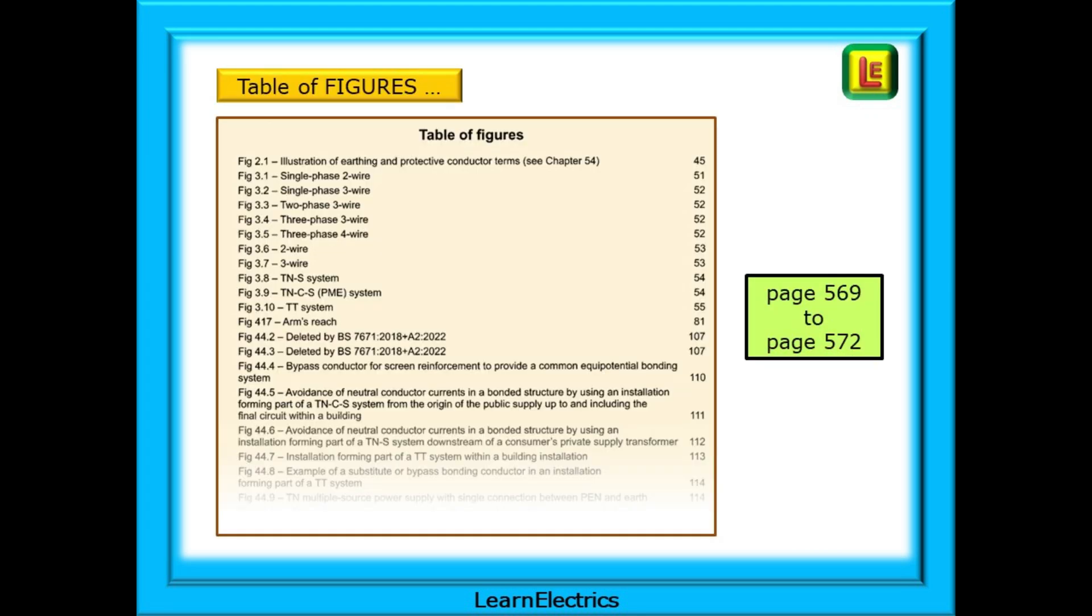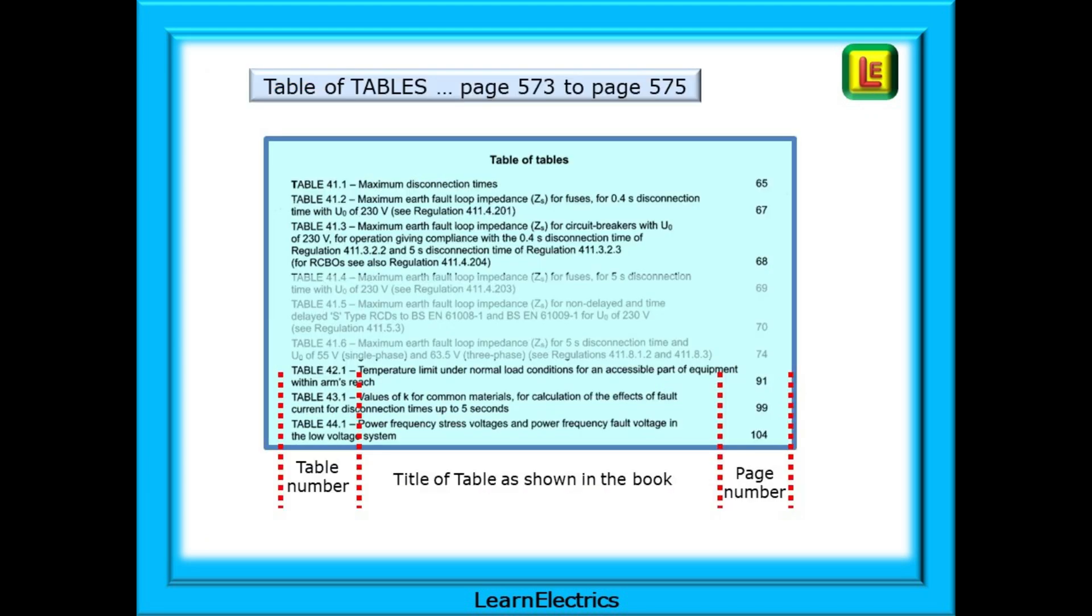How do we find the Table of Figures? It's on pages 569 to 572, and you'll see that it's a list, a table, of all the figures that appear in the Wiring Regulations book. Table of Tables can be found on pages 573 to 575. Each entry will show the table number, the title of the table as shown in the book, and the page number of where it can be found.